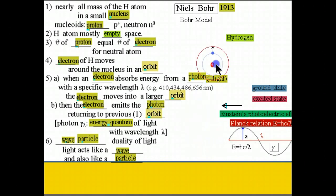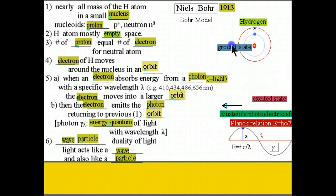So here you have the hydrogen atom and the electron is in its ground state. And when it is hit by a photon, it moves up to an excited state. And then it emits the photon and falls back to its ground state.